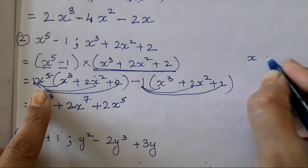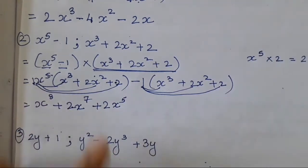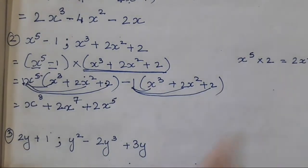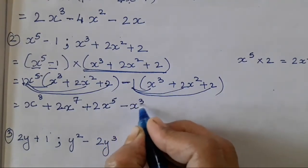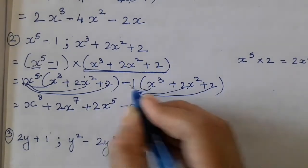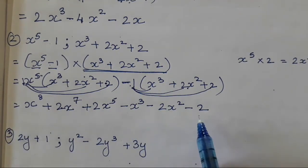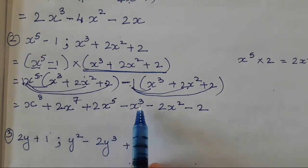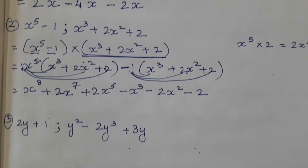If you all are getting confused, you can do it separately — x⁵ multiplied with 2 is 2x⁵. After this, 1 multiplied with x³ is going to be minus x³, then 1 multiplied with 2x² is going to be minus 2x², and 1 multiplied with 2 is going to be minus 2. Now rearrange them — check if they are arranged in the same pattern: 8, 7, 5, 3, 2 — it is arranged chronologically, so no need to change the terms.